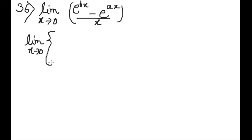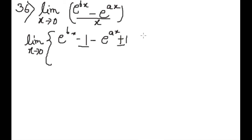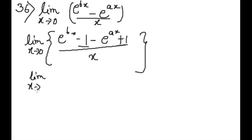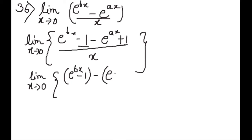सबसे पहले हम इसमें e^(bx) minus 1 minus e^(ax) plus 1 minus 1 plus 1 लगाएंगे। by x नीचे जो था वो वैसे रहेगा, limit of x is 0. अब हम इसे bracket में लिखेंगे: e^(bx) minus 1, minus common लिया हमने तो यह plus हो जाएगा e^(ax)।